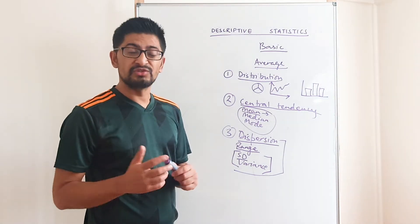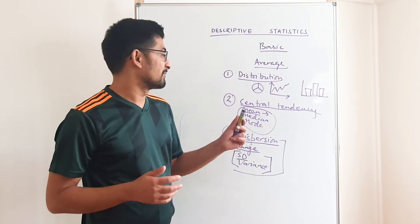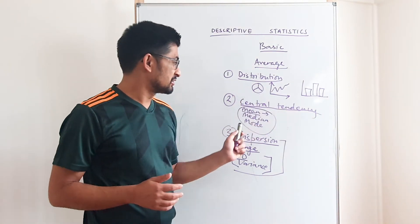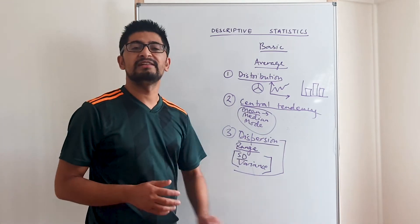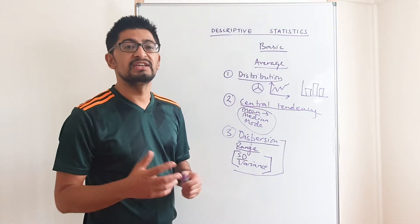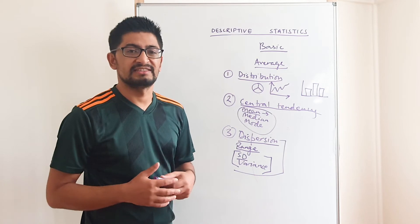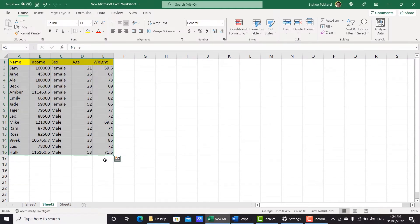So this is a basic explanation of descriptive statistics and these things can be easily done using Excel. What I'm going to do now is share my screen and show you how to generate distribution, central tendency, and dispersion using a random imaginary data set. Let's go to my screen. All right, this is the data set we are going to use to show you how we can generate descriptive statistics using Excel.